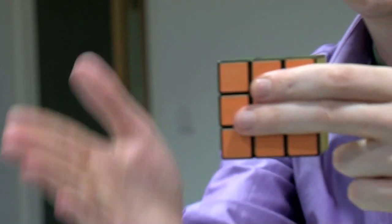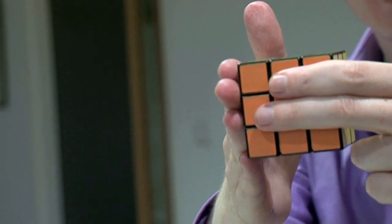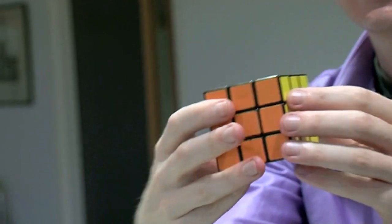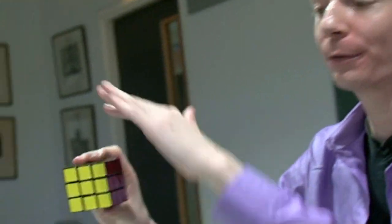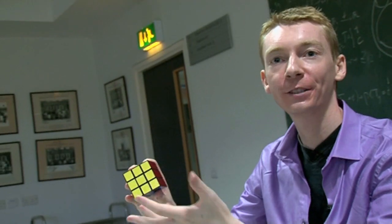Rubik's Cube fans have a notation. They call this the up, they call this the down, they call this the right-hand side for obvious reasons, the left-hand side, the front which is facing me, and the back which is facing away from me. So it's got up, down, left, right, front, and back.